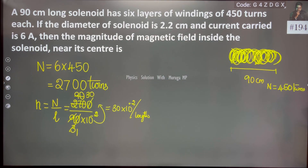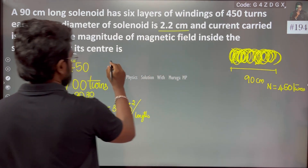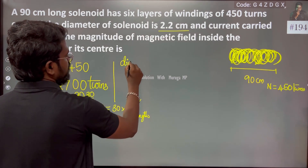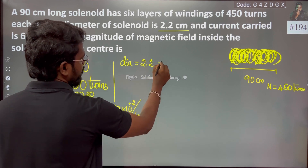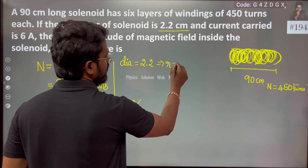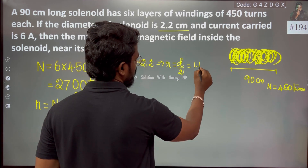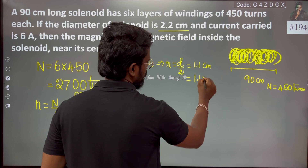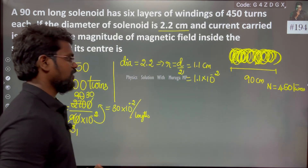The diameter of the solenoid is 2.2cm. If I want to find the radius r, that is d divided by 2, which is nothing but 1.1 centimeter, or 1.1 into 10 to the power minus 2 meter.